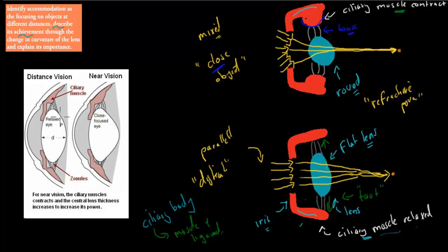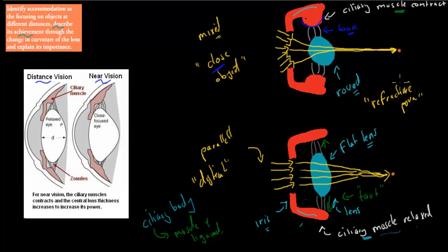So how is accommodation achieved? For distant vision we have flat lenses, for near vision we have rounded lenses. This is achieved through either relaxed ciliary muscles, which stretch the ligaments and give us a flat lens shape, or contracted ciliary muscles, which make the ligaments more loose and give us a rounder lens shape. Both of these are important to make sure we can have distant and near vision and still focus on the same point.